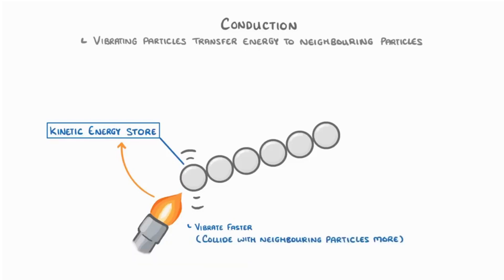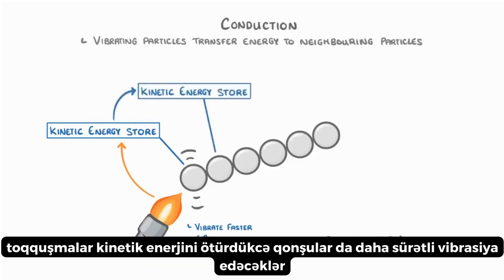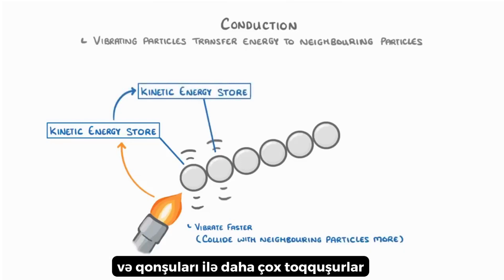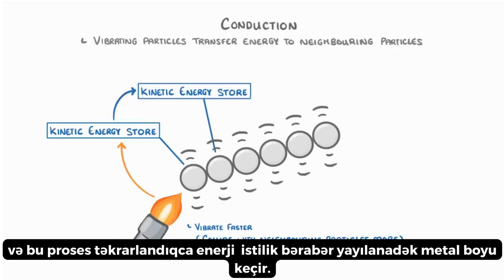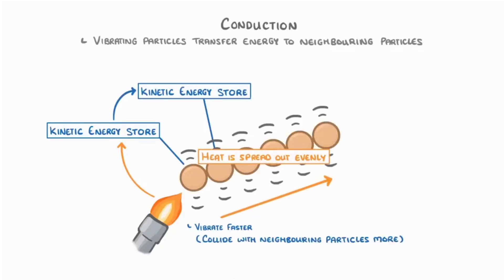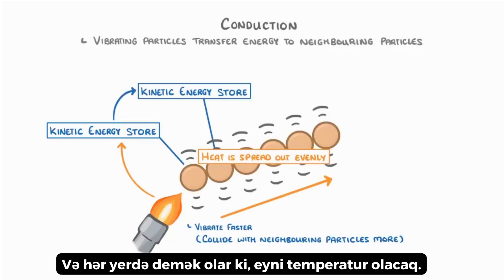As the collisions transfer kinetic energy, the neighbours will also vibrate faster and collide more with their neighbours. And as this process repeats, energy is passed along the piece of metal until, in the end, the heat is spread out evenly, and it will be pretty much the same temperature everywhere.